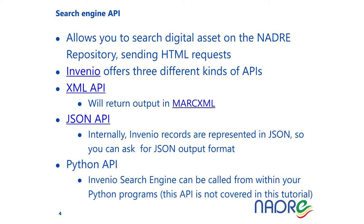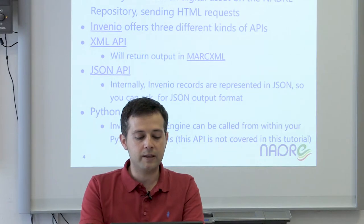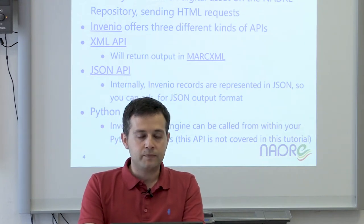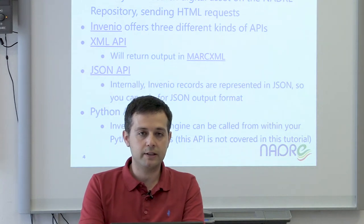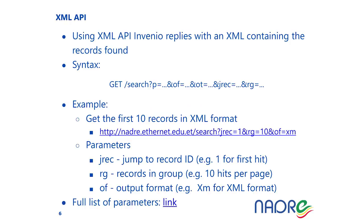Invenio offers three different kinds of APIs: the XML API, in which the output is returned in XML format using the MARCXML standard widely used in digital repositories; the JSON API, since Invenio internally stores records in JSON; and the Python API, which will not be covered in this tutorial. Using the XML API, Invenio replies with an XML containing the records found based on the query you perform.